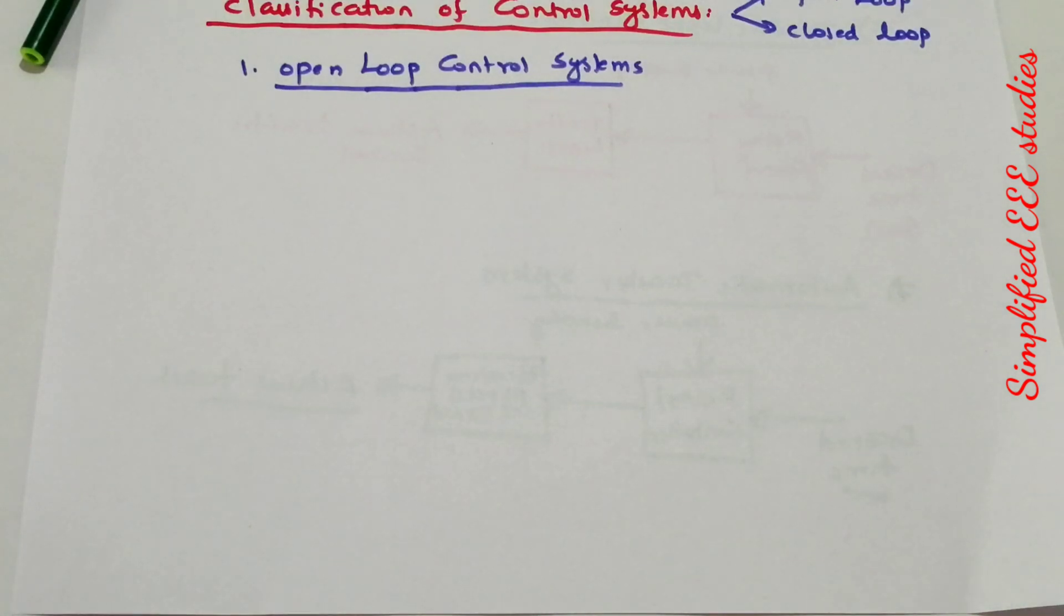Hello everyone, welcome back to Simplified RRR Studies. In the last session, I explained the classification of control systems: open loop control systems and closed loop control systems.